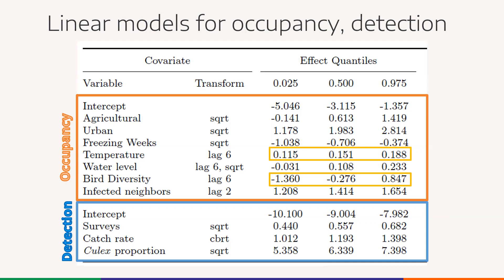Between the covariates, for some model effects we see strong evidence that the effect is not zero. That's the case for temperature — we believe temperature is principally important to the spread of West Nile virus. On the other hand, bird diversity is more weakly associated with West Nile virus prevalence. It has an association, but it also overlaps zero in its quantile range.